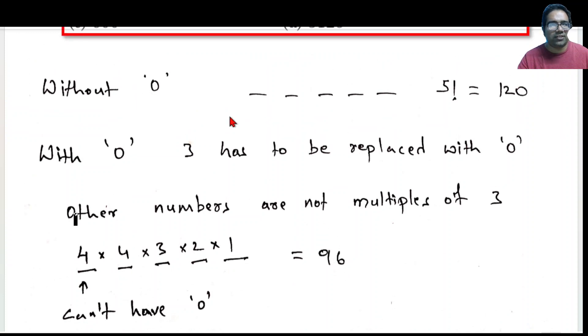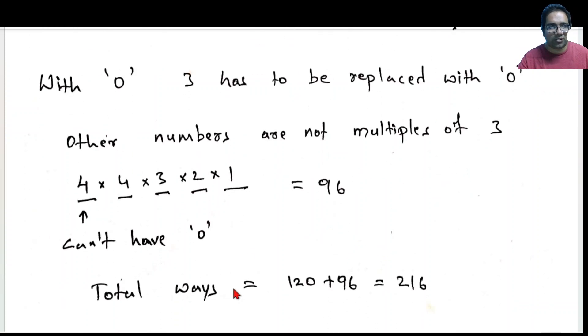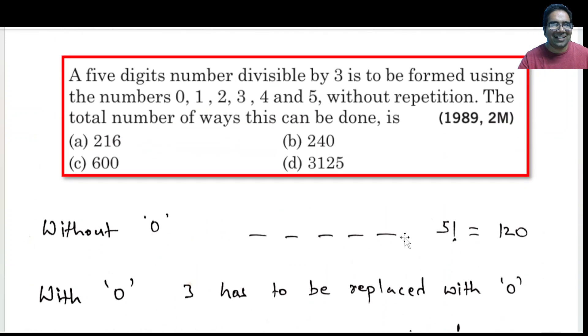So without 0, we have 120. That is plain 5 factorial. And with 0, we have 96. So the total number of ways or total number of such arrangements is 120 plus 96, which is 216. Basically, we can create 216 numbers which are divisible by 3 and are formed 0, 1, 2, 3, 4, 5.